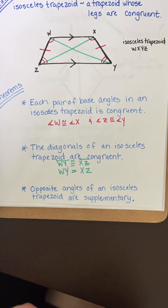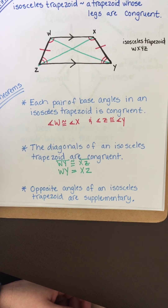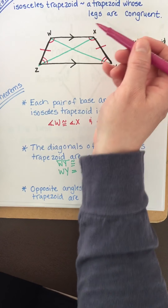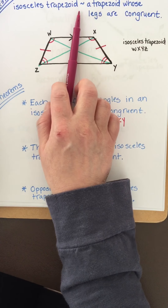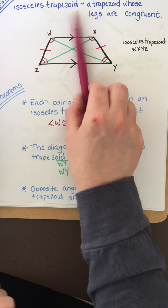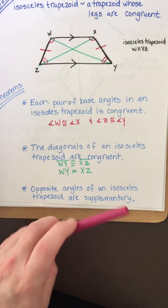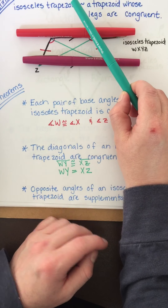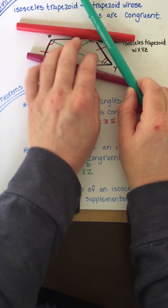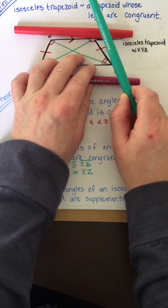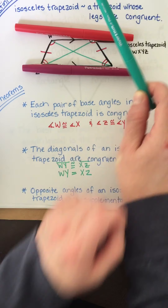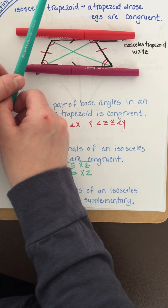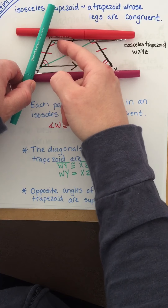The last theorem is that opposite angles are supplementary — these angles add up to 180 degrees. This goes back to parallel lines and same side interior angles. Here are my parallel lines, and if you think of the leg as a transversal, you've got two same side interior angles, so they're supplementary and add up to 180. Same thing over here — those are also same side interior angles adding up to 180.